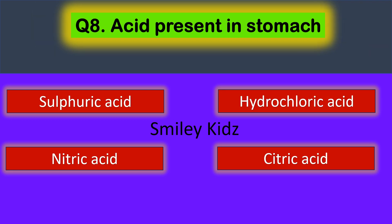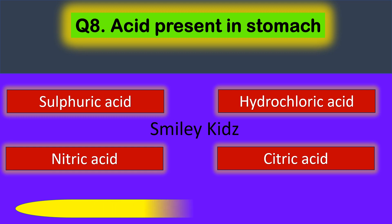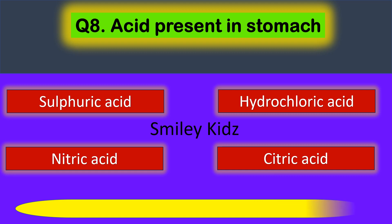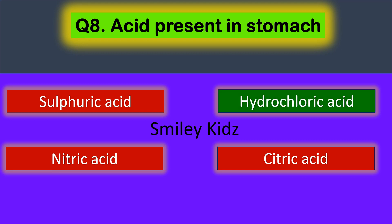Question number 8. The acid present in the stomach is... Your options are Sulphuric Acid, Hydrochloric Acid, Nitric Acid, and Citric Acid. The correct answer is Hydrochloric Acid. The acid present in the stomach is Hydrochloric Acid.